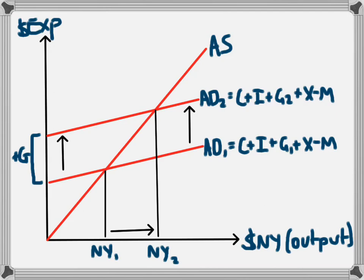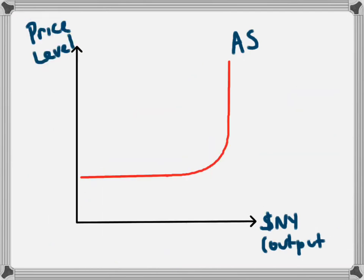The increase in government spending from G1 to G2 leads to an increase in national income from NY1 to NY2. But we're going to look at the same thing on the alternative model, which is this one here. If you're not sure how this particular model works, there are also videos on this channel which explain that.